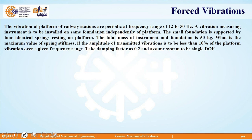Let us look at another numerical. The problem states that vibration platforms of railway stations have periodic frequencies ranging from 12 Hz to 50 Hz. A vibration measuring instrument is to be installed on the same foundation independently of the platform. Whenever a frequency range is given, we consider the fundamental frequency as the excitation frequency, so we take 12 Hz. Converting: omega equals 2π × 12, giving 24π radians per second.